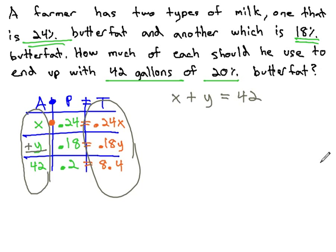x plus y tells us the amount of the two milks is equal to 42, the total final amount we want. And 0.24x plus 0.18y will give us the amount of butterfat out of the 42, which is 8.4.